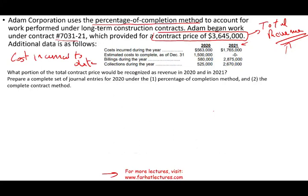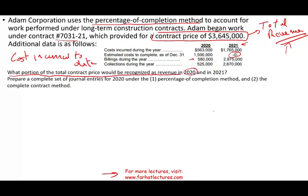Your cost is your measuring stick — it tells you how much revenue to recognize based on cost incurred. You are also given estimated cost to complete: $1.5 million for 2020 and zero for 2021, because the project will be completed. You're given billing and how much you collected during the year. The first question asks: what portion of the total contract price would be recognized as revenue in 2020 and 2021? Knowing what revenue to recognize is the key to solving these problems.